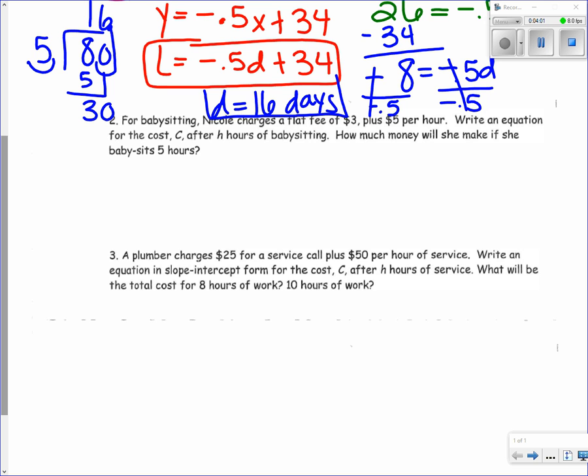Remember our strategies: put a triangle around our coefficient and a box around our constant. The coefficient, which is our m, we're looking for keywords like each, every, or per. We see $5 per hour, so that's our slope or coefficient. The flat fee of $3 is our constant.